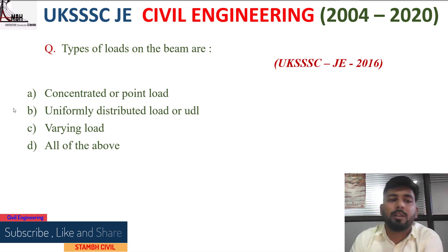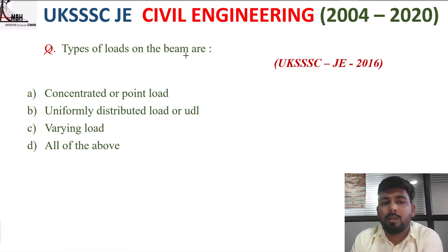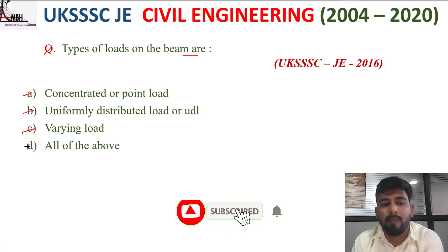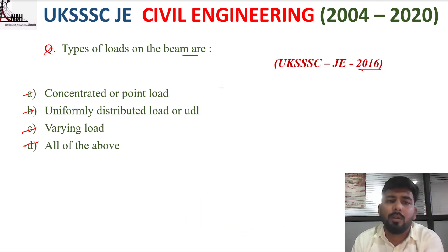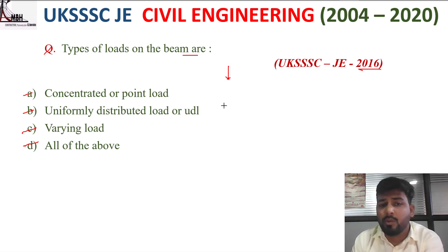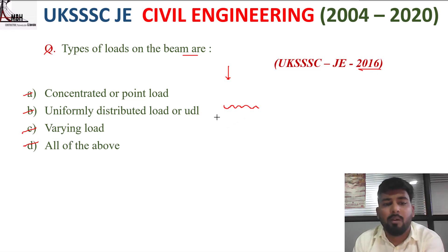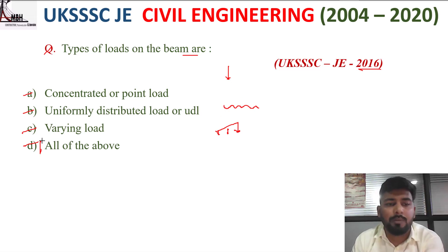Next question: types of loads on a beam are — option A concentrated or point load, B uniformly distributed load (UDL), C varying load, D all of the above. Since beams can carry point loads, UDL, and varying loads, the correct option is D, all of the above.